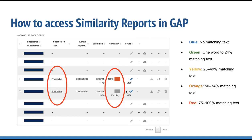The color of the report icon indicates the amount of similarity within the paper. Percentage ranges from 0 to 100%, and possible ranges are: blue for no matching text, green for one word to 24% matching text, yellow for 25% to 49% matching text, orange for 50% to 74% matching text, and red for 75% to 100% matching text.